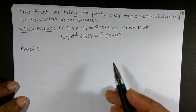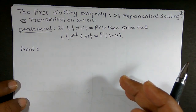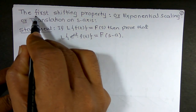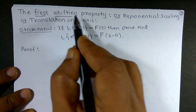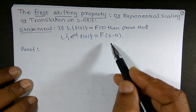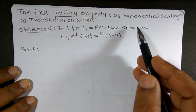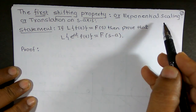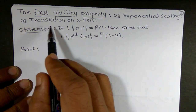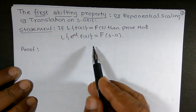Hello friends. One of the important properties of Laplace transform is the first shifting property. You may ask what we mean by the first shifting property, or sometimes we may call it exponential scaling or translation on the s-axis.